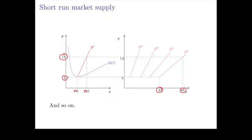You're just adding them up horizontally. So if you add up 4 identical supply curves horizontally, it amounts to multiplying them by 4.